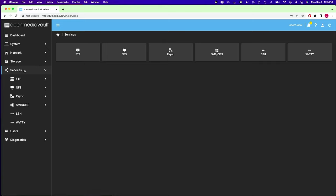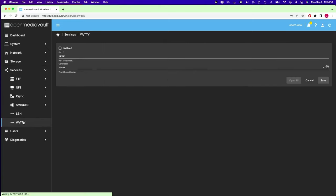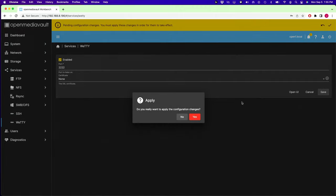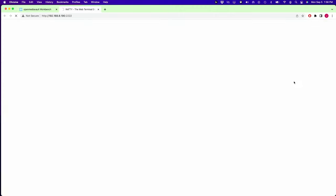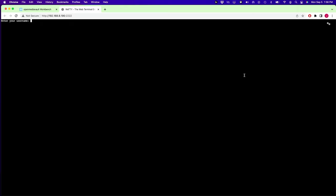Now if we click on services, now we have the Wetty terminal. We click on Wetty. We click enable. And then we click save, and check mark, and yes. And then we click open UI. And that will take us to the Wetty terminal, which we'll get back to in a second.